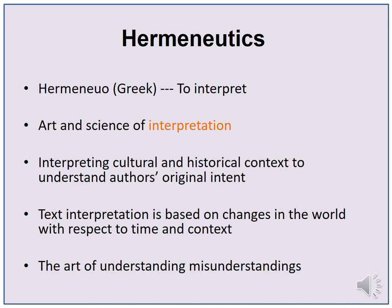Hermeneutics comes from the Greek word 'hermeneo', which means to interpret. It is actually the art and science of interpretation. Hermeneutics is interpreting cultural and historical context to understand the author's original intent. In hermeneutics, text interpretation is based on changes in the world with respect to time and context.